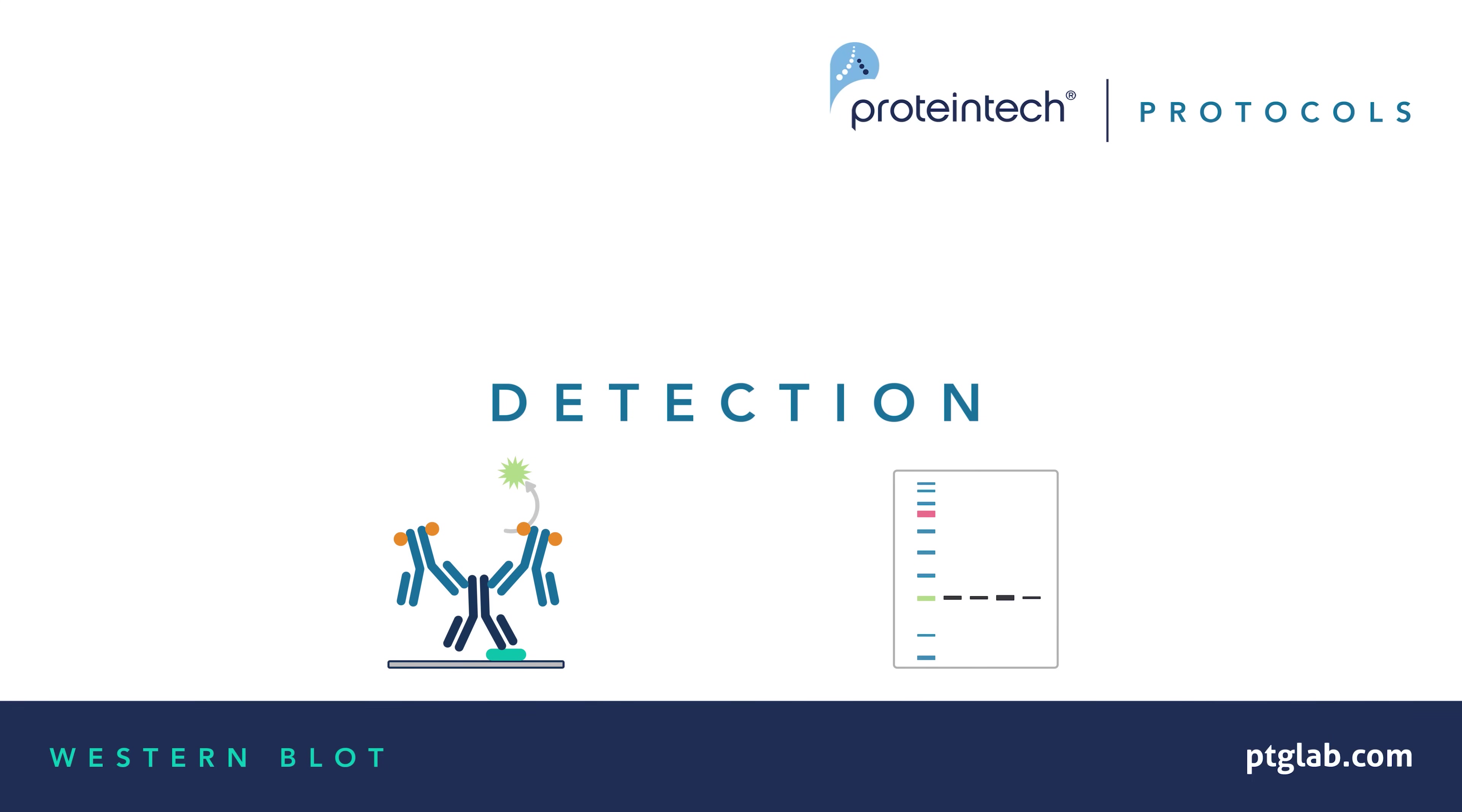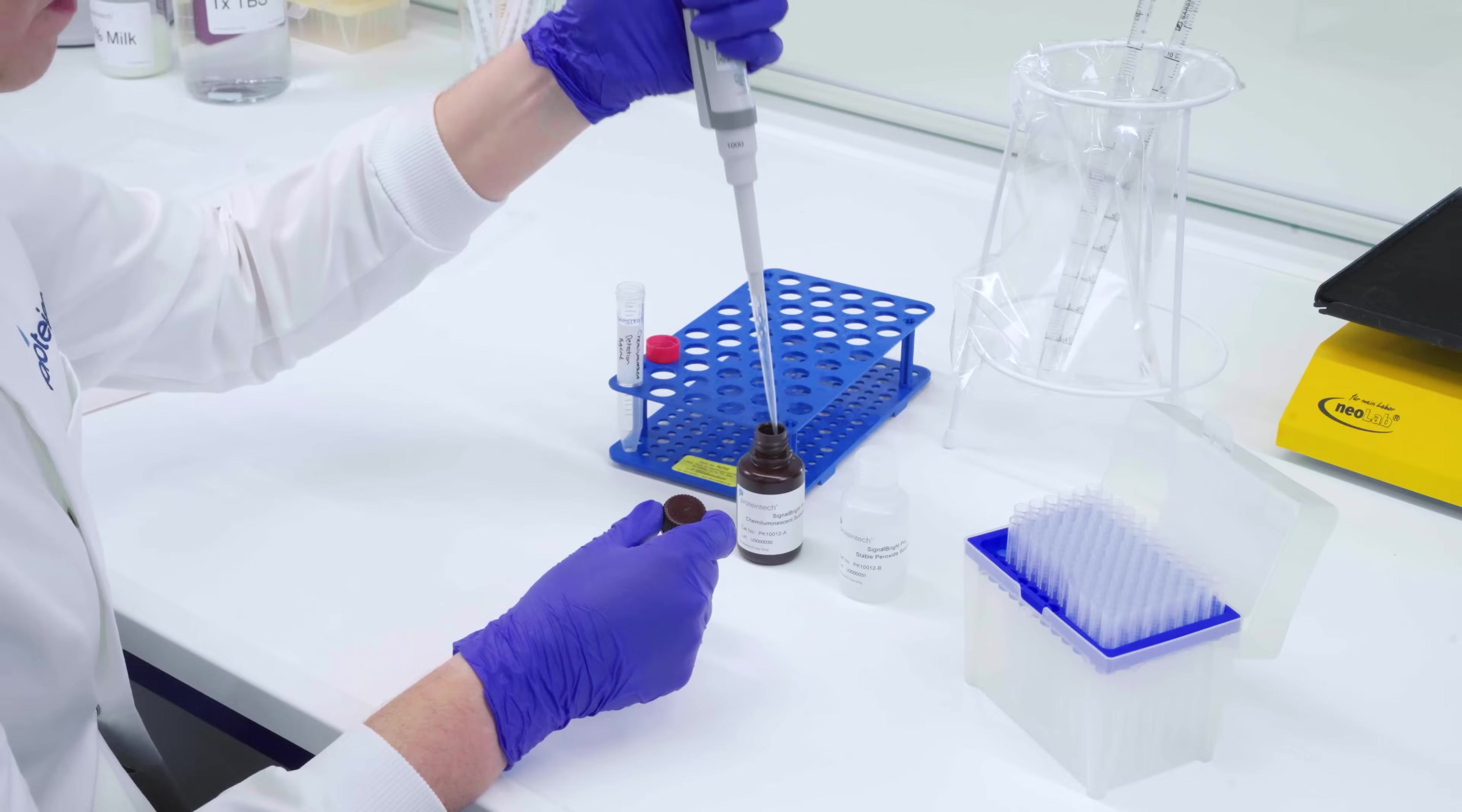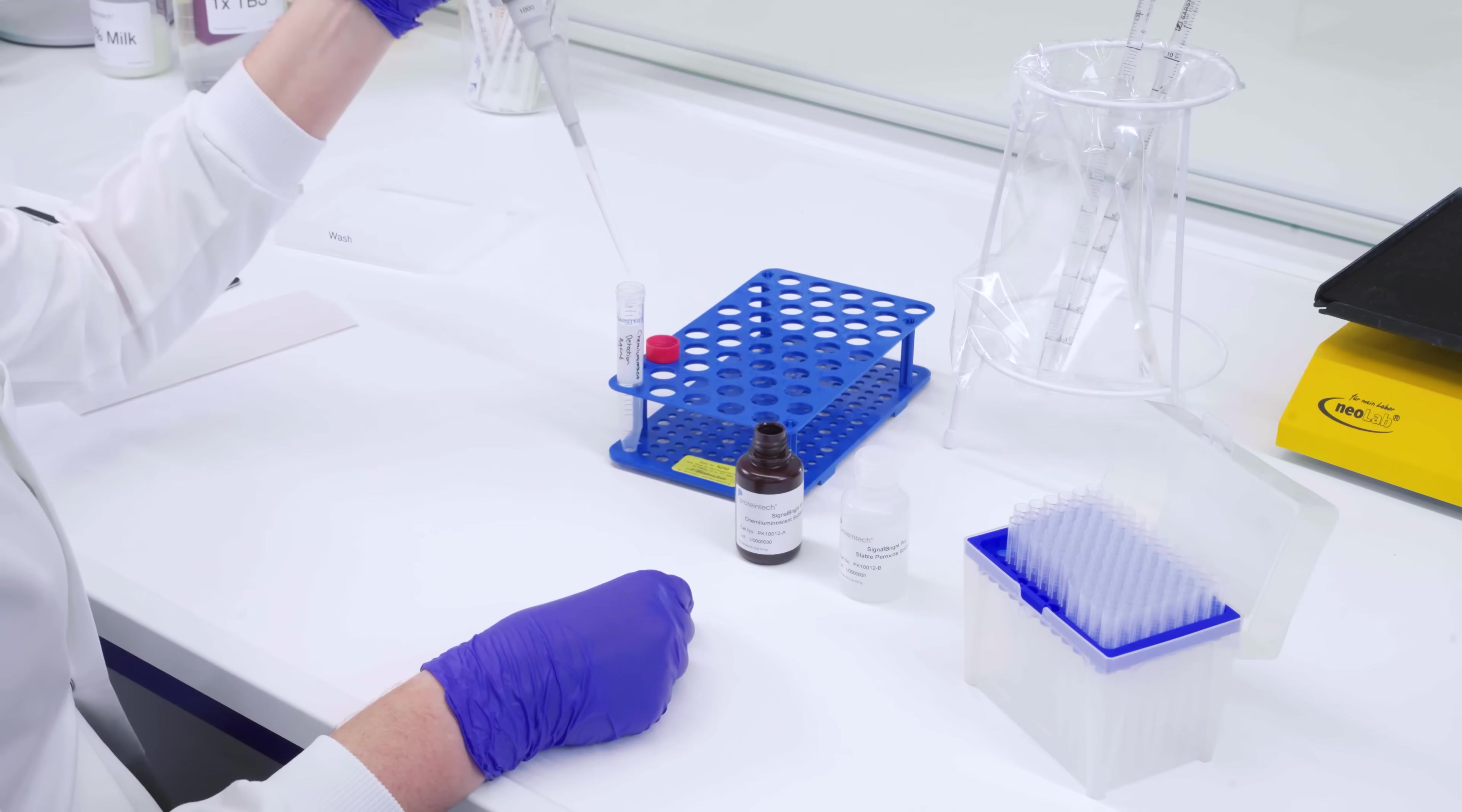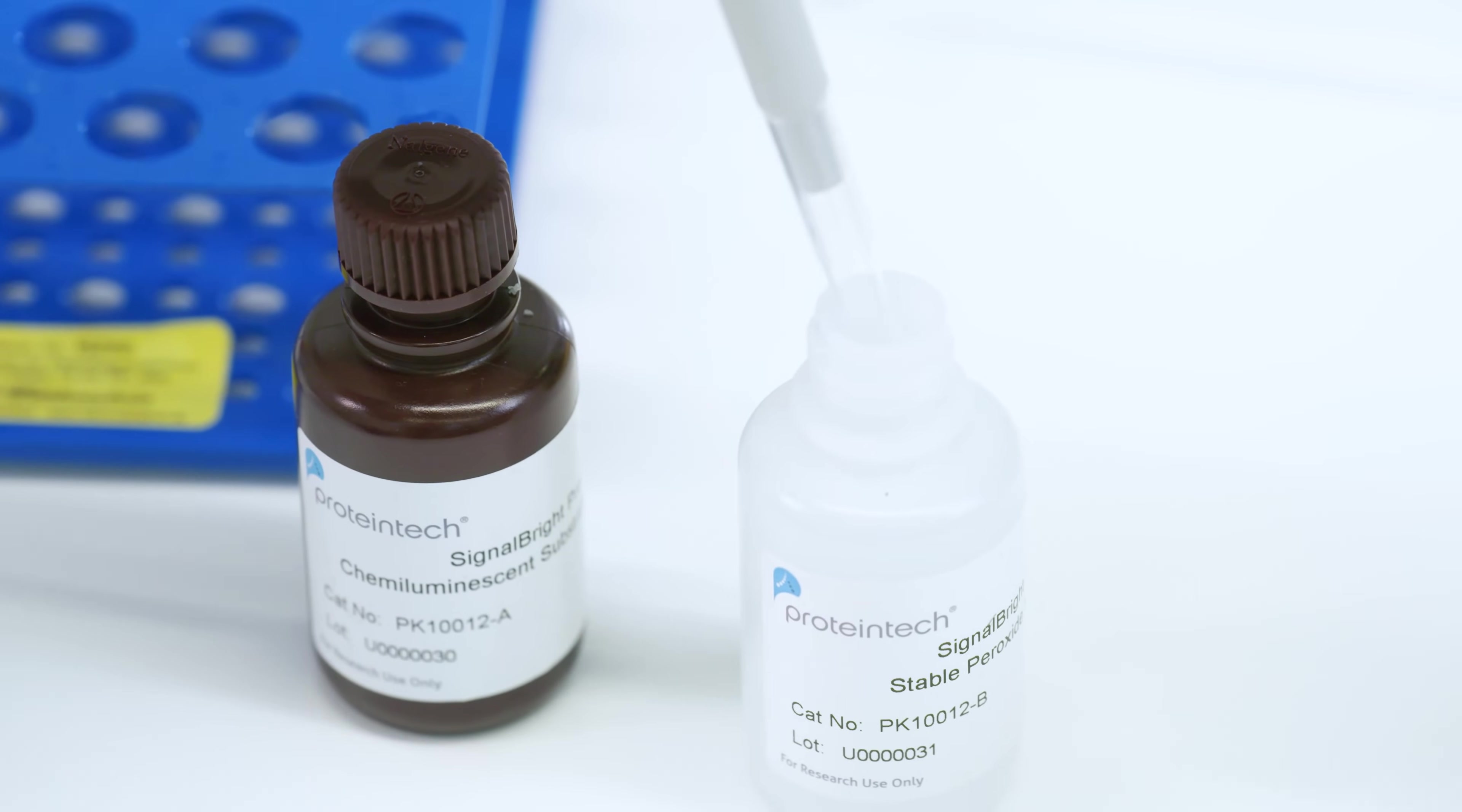There are multiple detection methods depending on the molecule that is conjugated to your secondary antibody. If the secondary antibody is conjugated to a fluorescent molecule, it can be directly detected using a digital imaging system. If it is conjugated to an enzyme, such as horseradish peroxidase, then an appropriate substrate must be added to the membrane prior to imaging.